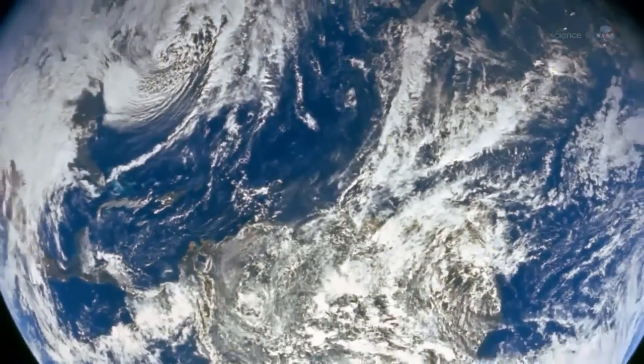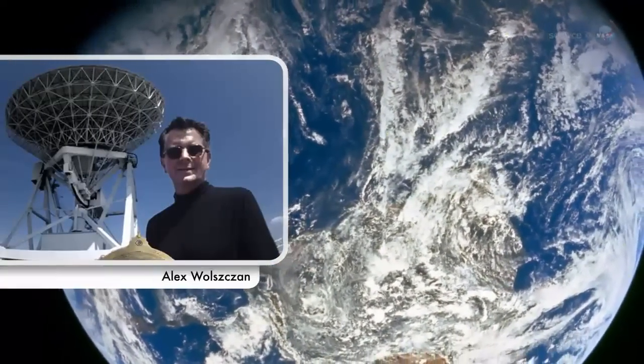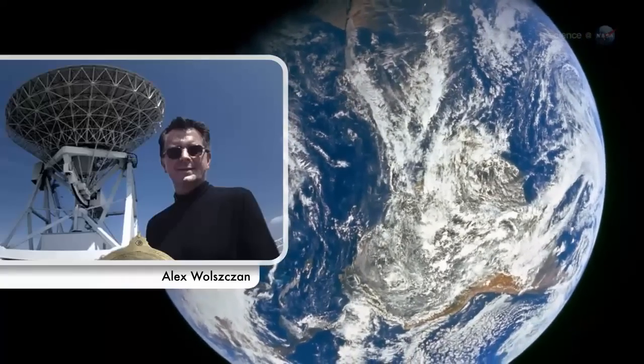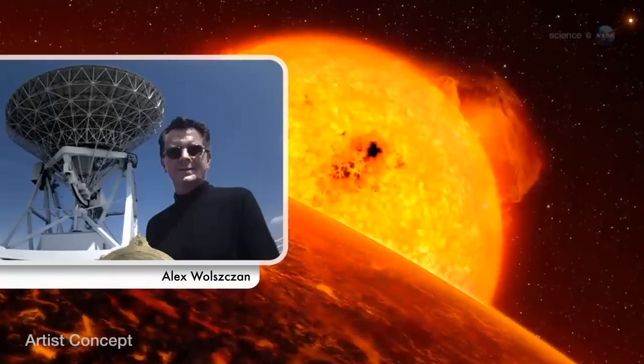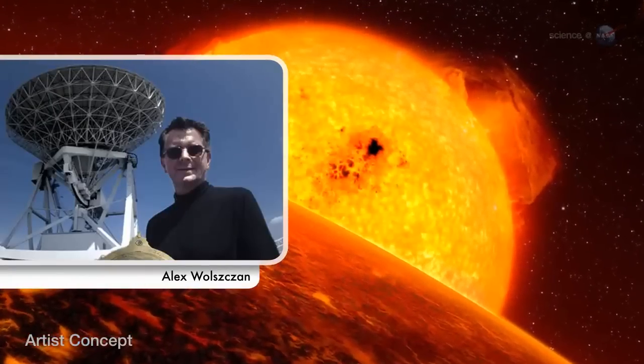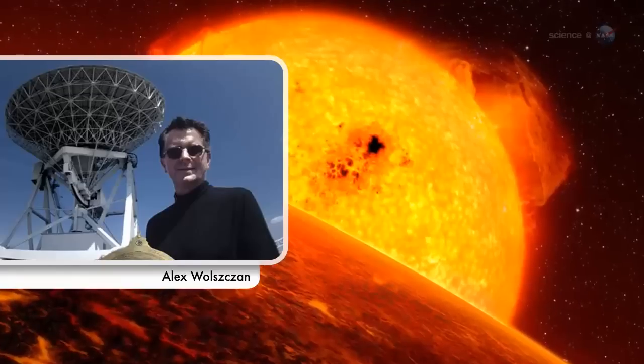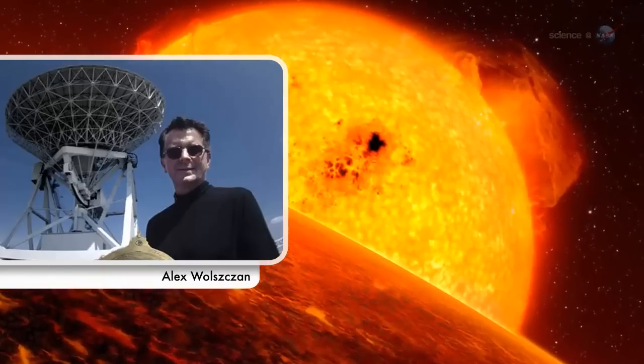Could the same thing happen to Earth? Yes indeed, says Alex Volchan, a member of the research team from Penn State University. A similar fate may await the inner planets in our solar system when the Sun becomes a red giant some 5 billion years from now.